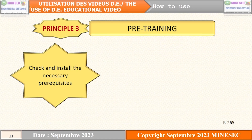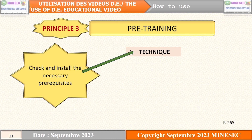The last principle is pre-training, whereby you check and install the necessary prerequisites. We look at it in two directions. In the technical direction, before carrying out a learning activity, you must make sure that all necessary materials are around you. You should not be fumbling to look for material during class. Everything must be ready — whether you are in a workshop or a computer lab, all working materials must be in place.